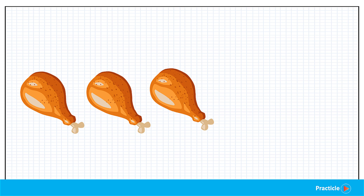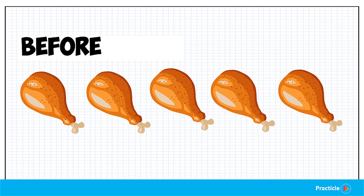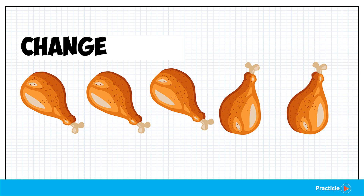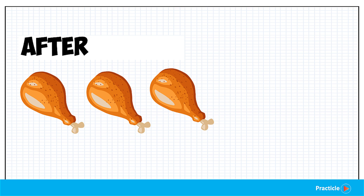The before situation, where you started off with five yummy chicken wings. A change — in this case, you ate two chicken wings. And the after situation, where the number of chicken wings becomes different from what we had in the beginning. So that's it. That's the before and after concept.